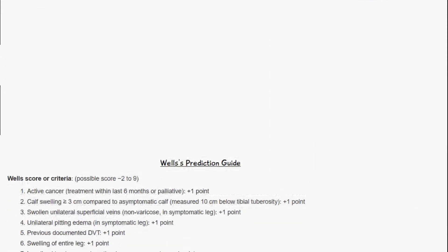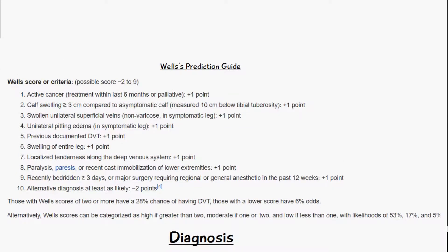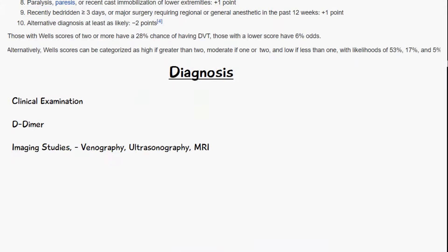The Wells prediction guide is a probability test to assess whether the patient has deep vein thrombosis, helping with diagnosis and differential diagnosis. It takes into account a number of signs and symptoms, each given a score. For example, active cancer, calf swelling, or pitting edema each contribute a score. If the total score is greater than three, there is a high probability of DVT; one to two is moderate probability; and zero or less is low probability.